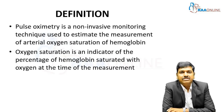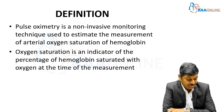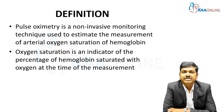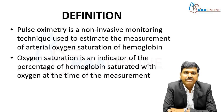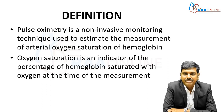Coming to the definition: a pulse oximeter is a non-invasive monitoring technique used to estimate the measurement of arterial oxygen saturation of hemoglobin. Oxygen saturation indicates the percentage of hemoglobin saturated with oxygen at the time of measurement. For example, if the hemoglobin level is 15 grams per deciliter and 14 grams of that hemoglobin is completely saturated with oxygen, then the oxygen saturation will be 14 divided by 15 into 100.